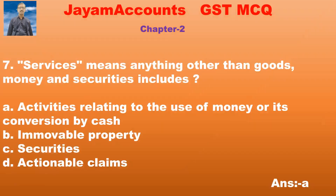Question number 7: Services mean anything other than goods, money, and securities. This includes — Option A: activities relating to the use of money or its conversion by cash. Option B: immovable property. Option C: securities. Option D: actionable claims.